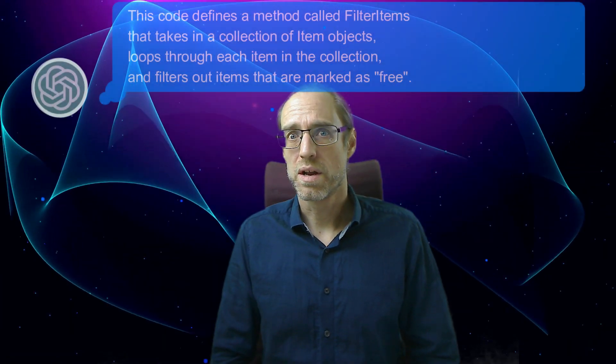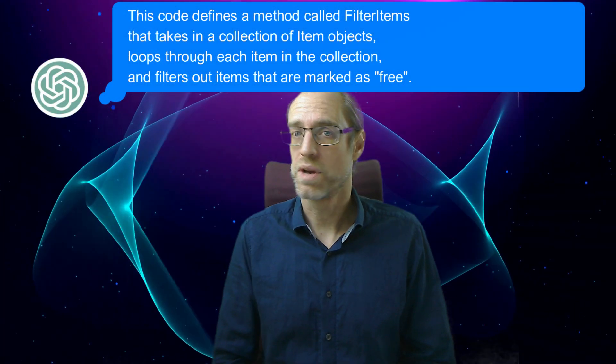Enter level four, semantics. What does the method actually do? It gives you back a list of items that only contains the free items. Coincidentally, this is the level what an AI like ChatGPT will read the code at.